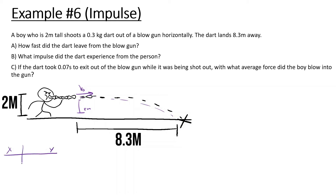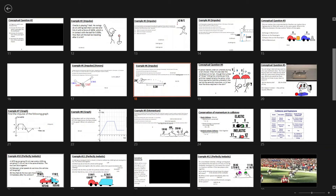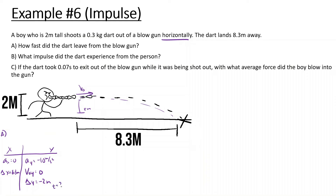Part A is a projectile motion problem. Acceleration in x is 0, acceleration in y is negative 10 m/s². The dart travels 8.3 meters in x, initial velocity in y is 0 since it's horizontal, and displacement in y is negative 2 meters. Using displacement in y equals initial vy times t plus one-half ay t squared: negative 2 equals one-half times negative 10 times t squared, solving gives t equals 0.63 seconds.